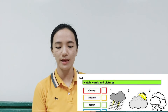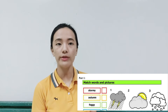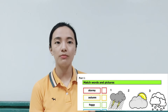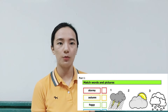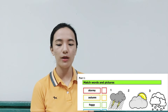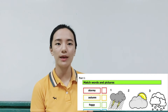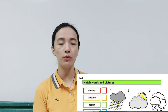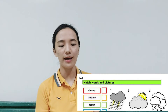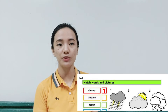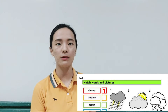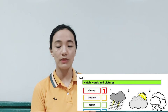Moving on to the activity — part one. The instruction says: match words and pictures. You need to find the picture that best describes the word. For example, number one: the word is 'stormy.' What picture can describe the word stormy? The answer is the first picture, number one. Now write the number one in the box.